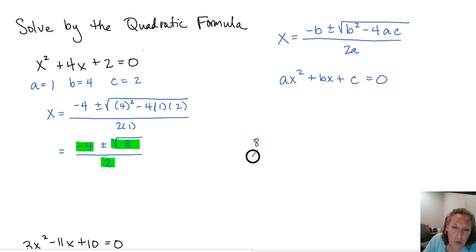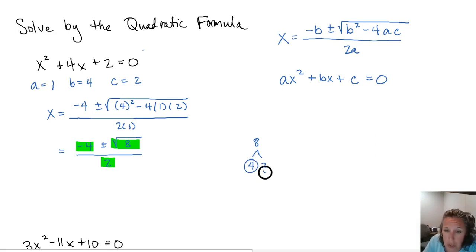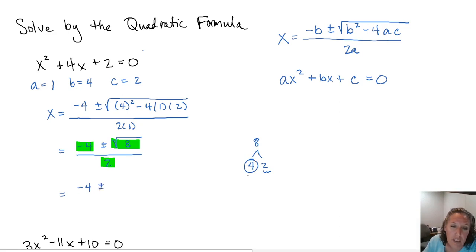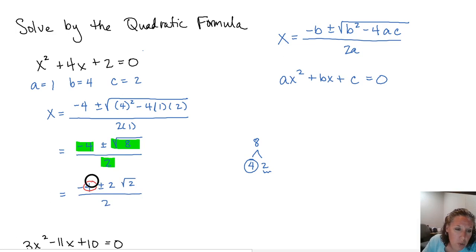For 8, we're looking for the biggest perfect square that goes into it. Well, 8 is the same thing as 4 times 2. 4 is a perfect square; 2 is not and does not have any perfect squares that go into it. So we can write this as the square root of 4 times the square root of 2. The square root of 4 is 2, and then this 2 is still underneath the square root. We still have a 2 in the denominator.